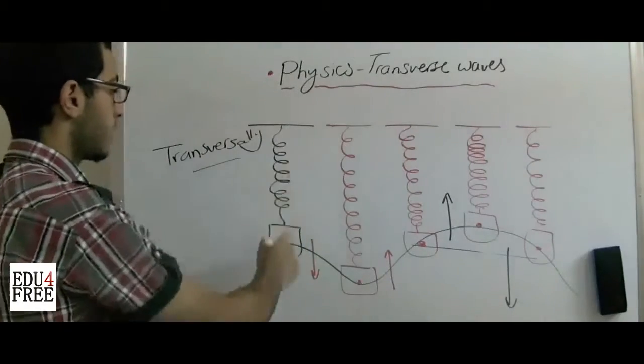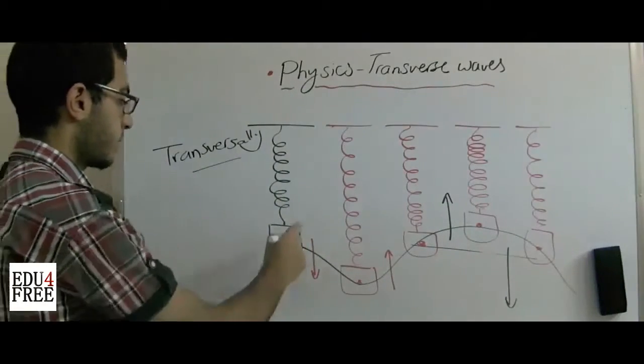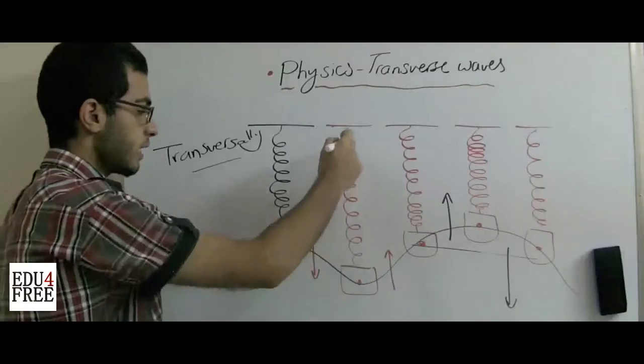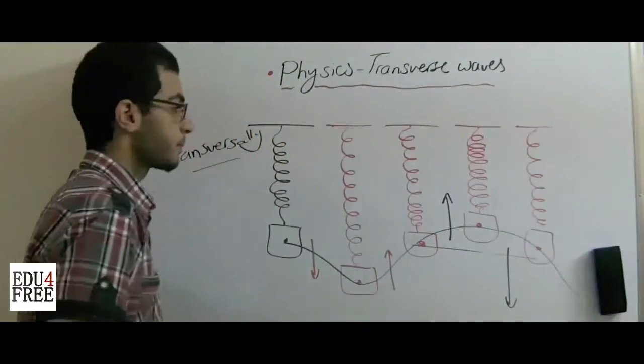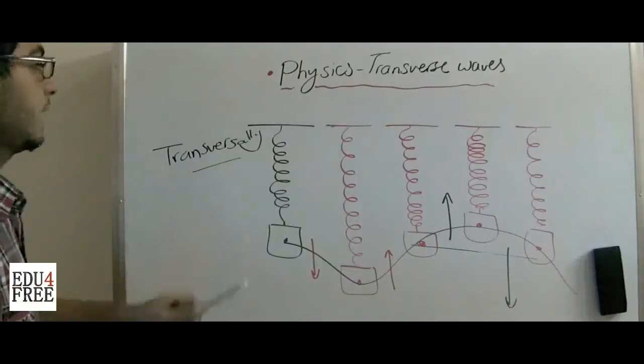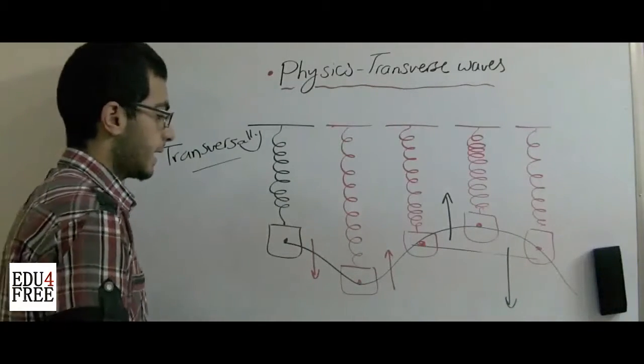Here the body is attached vertically to a string and it's pulled downwards. So it moves up and down from its equilibrium or rest position. This is called a transverse wave. And as we can see...